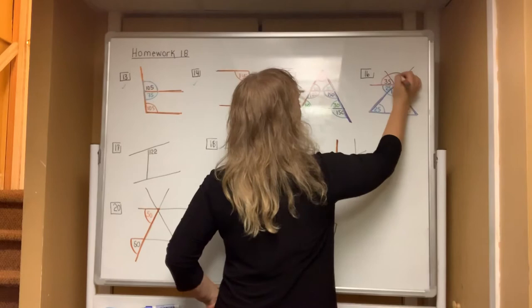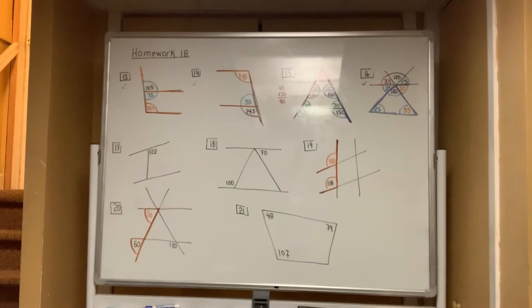That 120 is the angle on top, and the other half of the bow tie is 120 up here. You are done with number 16 — every single angle is found.